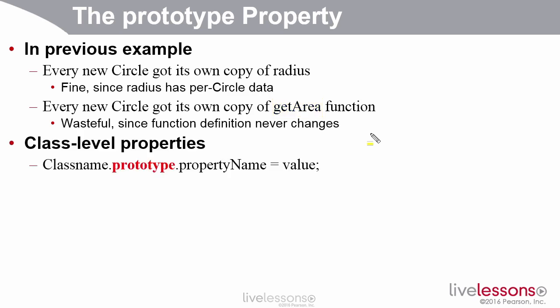So JavaScript has this idea of properties that belong not to each individual instance, but shared properties that belong to the class. And you use a special field that's automatically defined called prototype. So if you take the class name, like person or circle, and you say dot prototype dot a field name, then it assigns it at the class level.